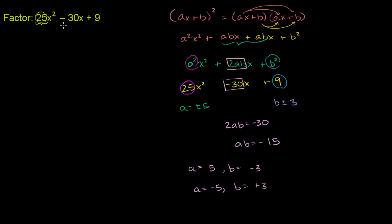So if we factor this out, this could be either a is negative. Let's do this first one. It could either be a is 5, b is negative 3. So this could either be 5x minus 3 squared. a is 5, b is negative 3. It could be that,